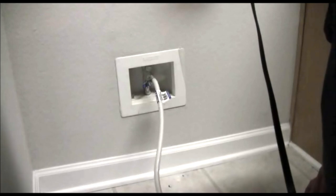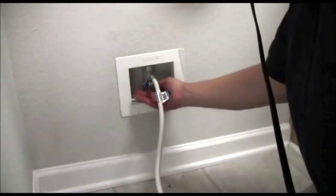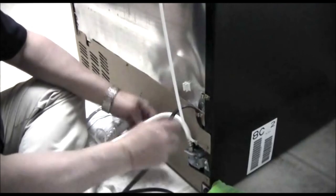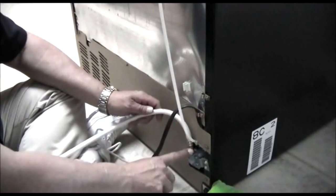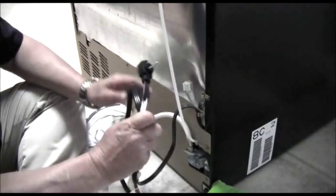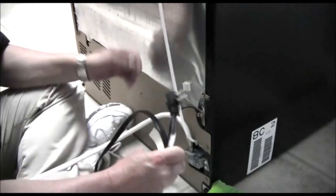Now we want to go ahead and turn the water supply off. Now we've got the water turned off to the line coming into the ice valve, the ice maker valve, and what we want to do also is go ahead and unplug the refrigerator just for safety reasons.